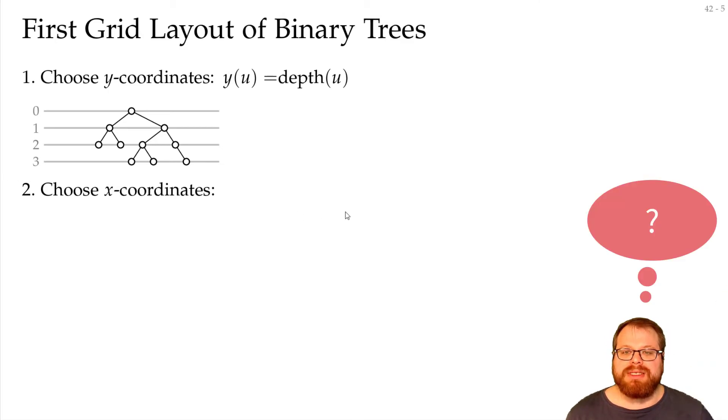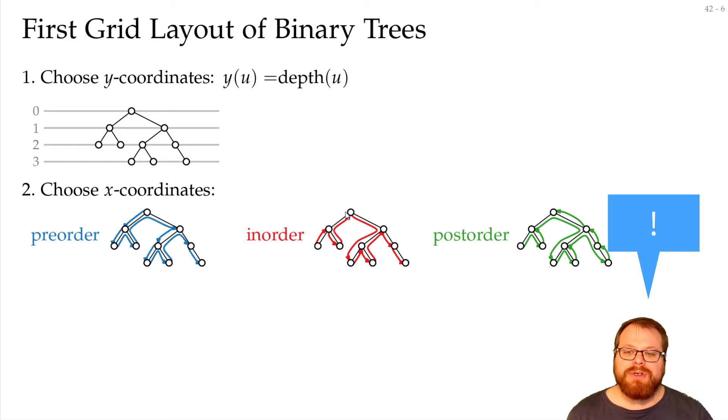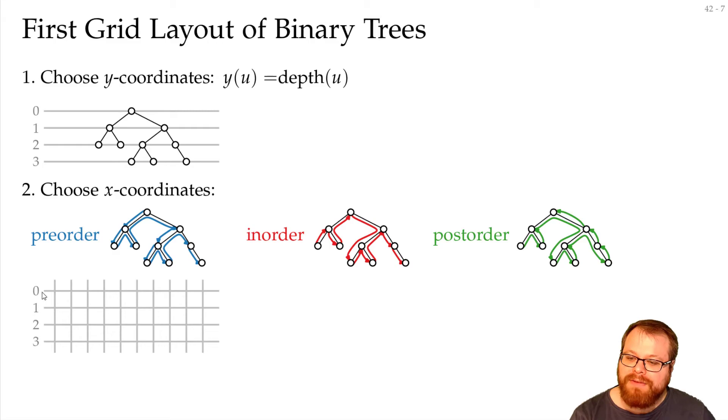How would you choose the x-coordinates? We just learned about three traversals. So we will just use those to pick the x-coordinates. And that's it. That's the whole algorithm. We have the y-coordinates from 0 to 3, and from left to right we want to place the vertices by this traversal. So we start with the root, go to the left child, left child to the sibling, and we have a drawing of the binary tree.